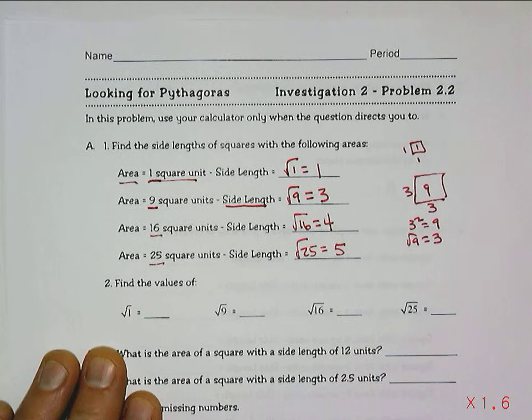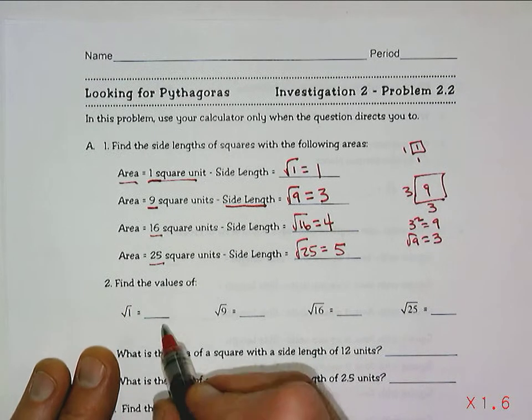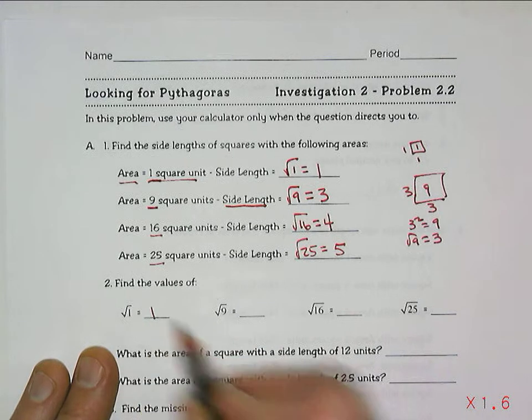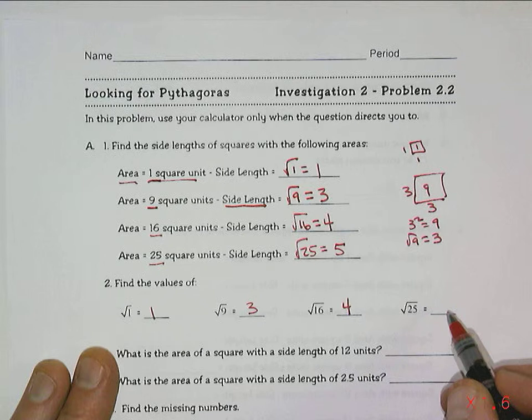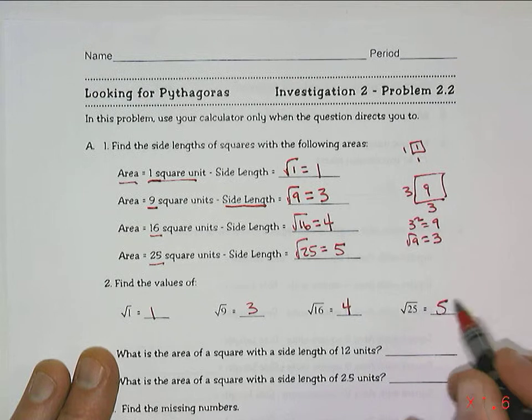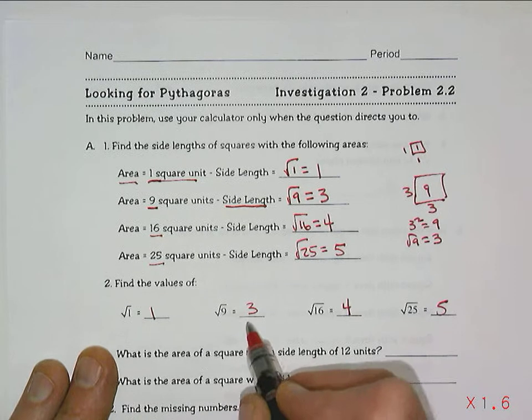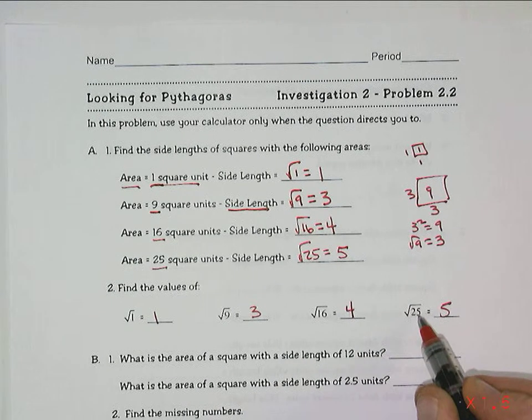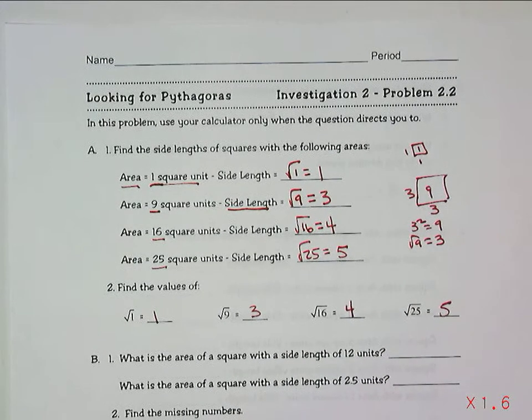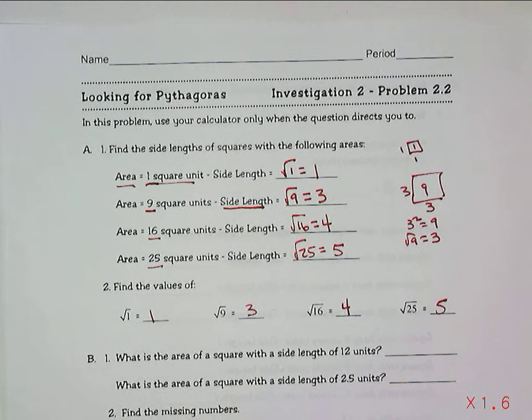And so these are basic square root numbers we should know. The square root of 1, the square root of 9, the square root of 16, the square root of 25. Because 1 squared is 1, 3 squared is 9, 4 squared is 16, 5 squared is 25. Those are the roots of the square, of the area of the square.